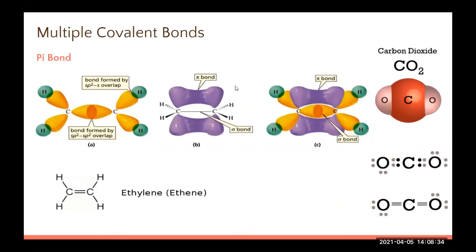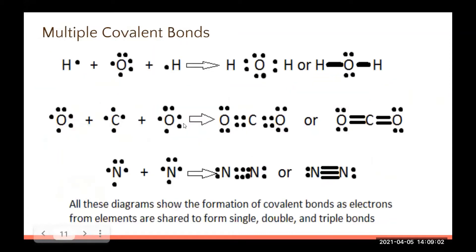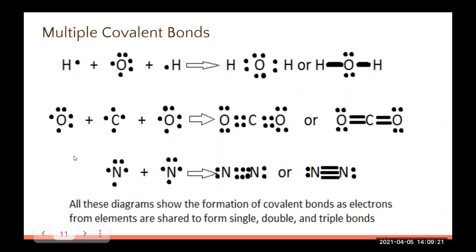Looking at where the overlaps are shows where the bonds form. A carbon-to-hydrogen bond is a single bond, but a carbon-to-carbon bond can be a double bond with a pi bond. The double overlaps show the pi bond visually. For drawing: sigma bond for H2, double bond for oxygen with carbon, and triple bond for nitrogen. We may not need to draw all of these, but it's good to visualize what the covalent bonds look like.